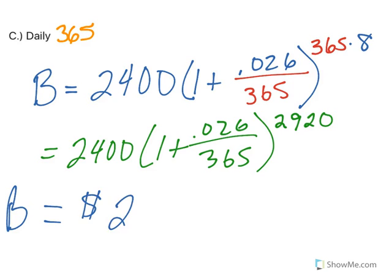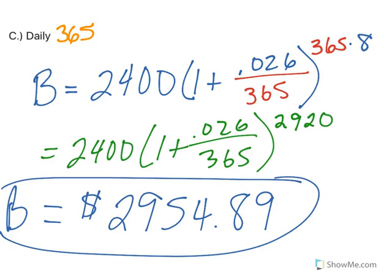When I plug that into my calculator, my ending balance is $2,954.89. That's only about $0.64 more than compounding monthly. But depending on how much you start with and how long you keep it in, those cents can add up. So that's using your compound interest formula.